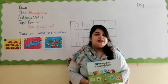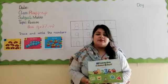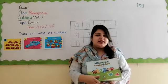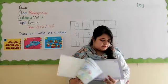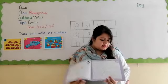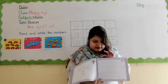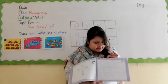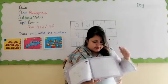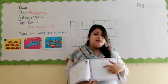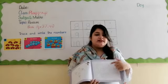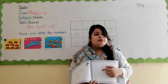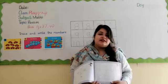Okay students, now we'll do some activities in your math book. Open your math book to page number 37. Page number 37 — trace and write numbers. There are some numbers here; we will trace and write them. The teacher will show on the board and you do it in your books.